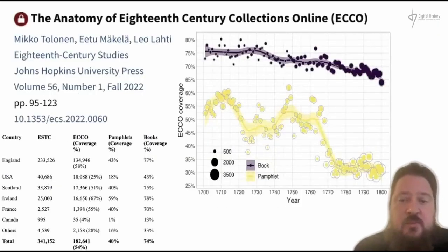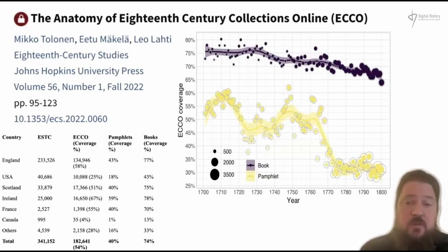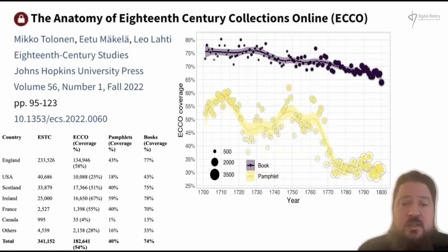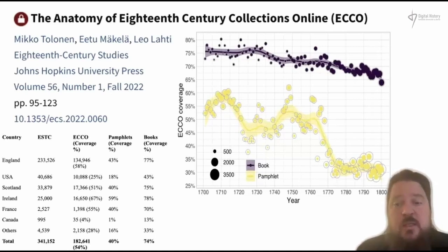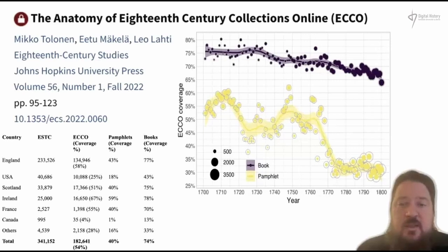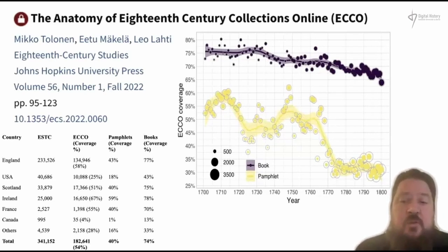I want to mention one article in particular for anyone working with British sources: 'Anatomy of 18th Century Collections Online,' published in 18th Century Studies just over a month ago and openly available. For example, if you want to use ECCO for data mining, it's very important to know that the coverage of pamphlets in the ECCO data drops drastically after the 1770s. If your research interest is pamphlets in North America, ECCO is not the correct source because there are very big gaps in the data. That kind of information is available through that article.